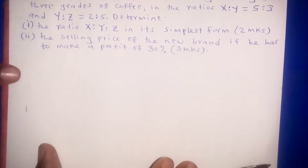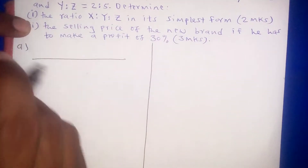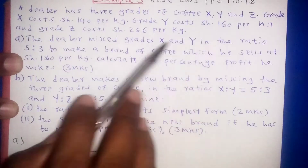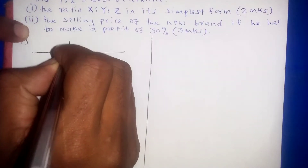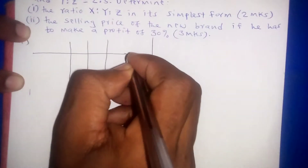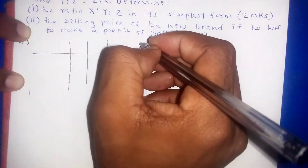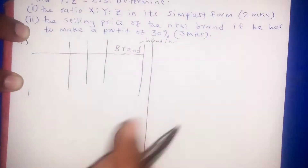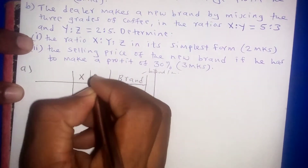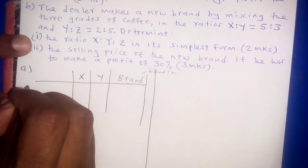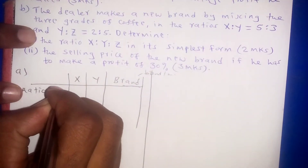The first thing we'll do is make a symbol table. For part A, the dealer mixes X and Y — that is two grades only — in the ratio of 5 to 3. So we'll make three columns: one for grade X, one for grade Y, and one for the mixture, which is called the brand. Sometimes you can also use the word blend or mixture. The brand is made of X and Y. The ratio is given in kilograms.